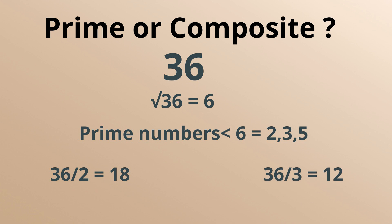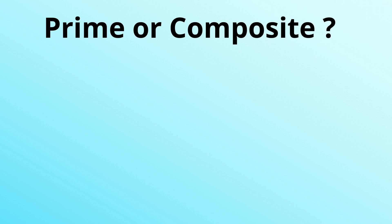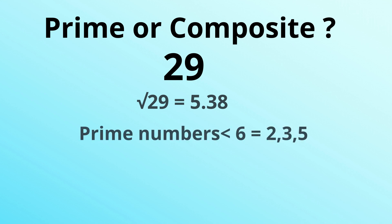So if a number doesn't meet this rule, then it must be prime. Let's take a look at 29. The square root of 29 is 5.38 roughly. So we only need to look and see if it is divisible by prime numbers smaller than 6, which are 2, 3, and 5.